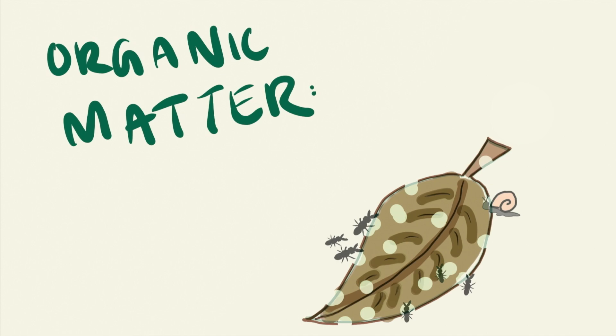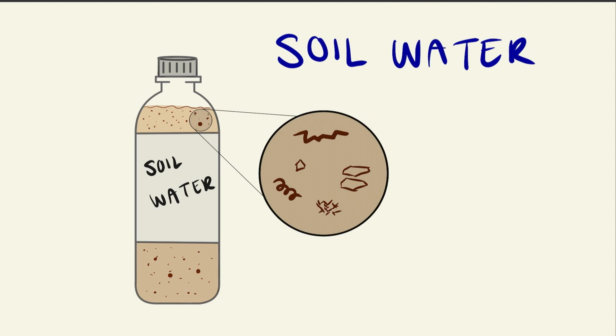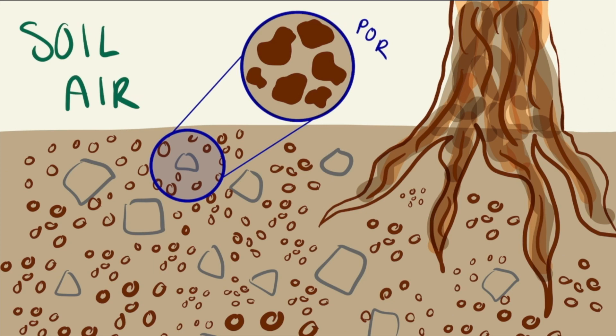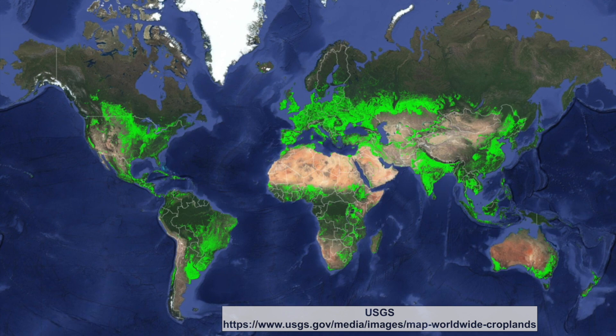Soil water isn't like the water we drink. It contains nutrient molecules and colloids, which are tiny specks of minerals or organic matter stuck in the water. Soil air is pretty different from the air we breathe. Although it has about the same amount of nitrogen as our atmosphere, the amounts of oxygen, water vapor, and carbon dioxide vary dramatically from soil to soil.